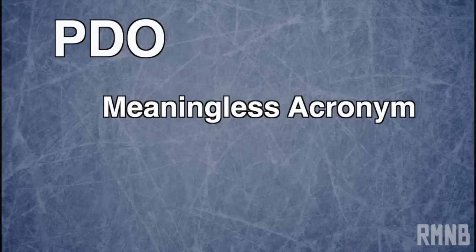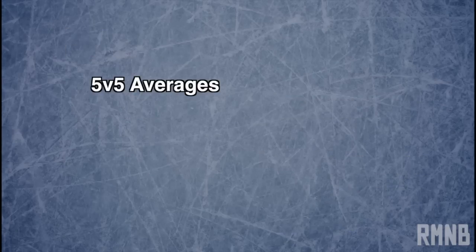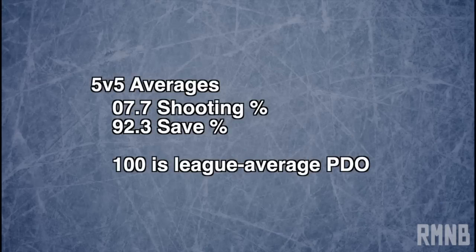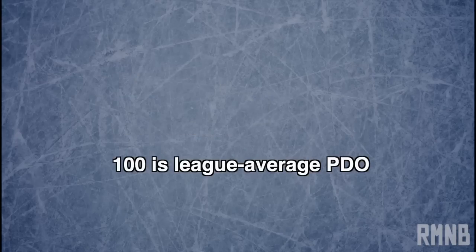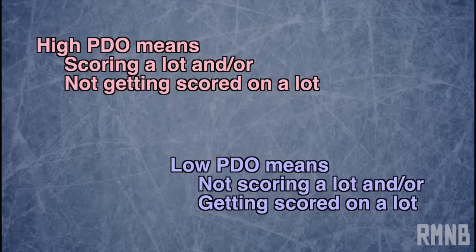PDO doesn't stand for anything, but it helps us measure the randomness, or luck, of hockey. The average 5-on-5 shooting percentage in the NHL is around 7.7%, and obviously that means that the average save percentage must be around 92.3%. You add those numbers together and you get 100% — that's your average league PDO. But because goals are sort of rare events, those percentages jump all around inside small samples, and there's not a lot of evidence that players can control those variations. So if a player has a PDO above 100, they're getting sort of lucky, and if a player has a PDO below 100, they're getting unlucky.